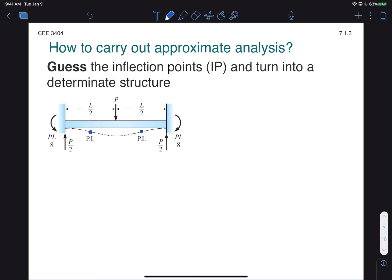Let's take a fixed-fixed beam. That's third degree indeterminate. But we know from previous analyses that it should have two inflection points, roughly around one-fourth and three-fourths of the length of the beam. The overall idea here is that we want to approximate this beam by replacing the points of inflection with hinges. We can do that because we know that at points of inflection, the moment is zero. Now we've eliminated two degrees of indeterminacy, and we've turned this into a completely determinate structure that we can break apart and solve.